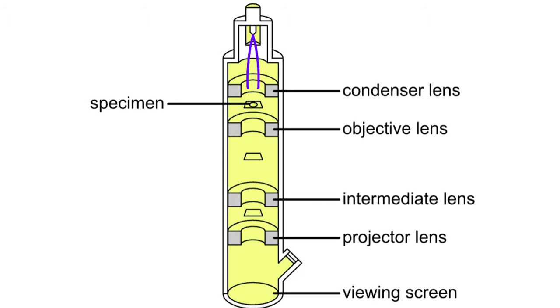A beam of electrons passes through a condenser lens and is focused on the specimen. The specimen has been treated with heavy metals and is held on a copper grid that allows electrons to pass through.